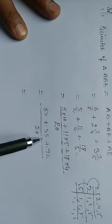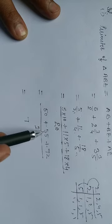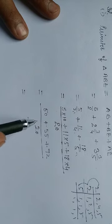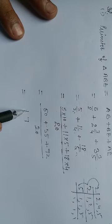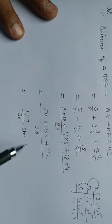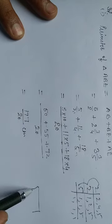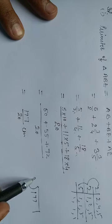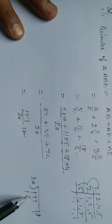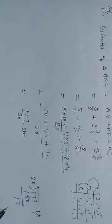This equals 50 plus 55 is 105, plus 72 is 177, over 20 cm. Now we convert this to mixed fraction: 177 divided by 20 is 8 with remainder 17, so 8 and 17/20 cm.